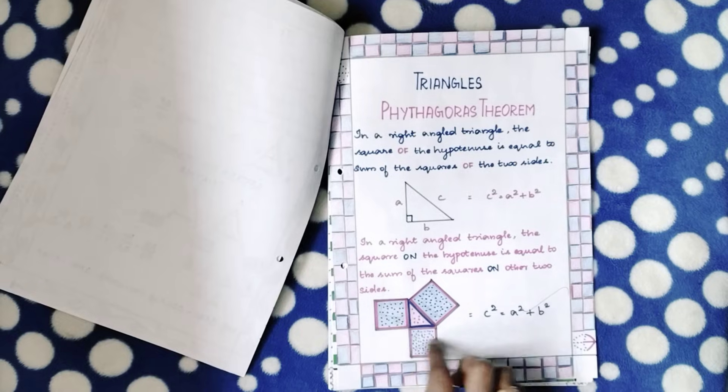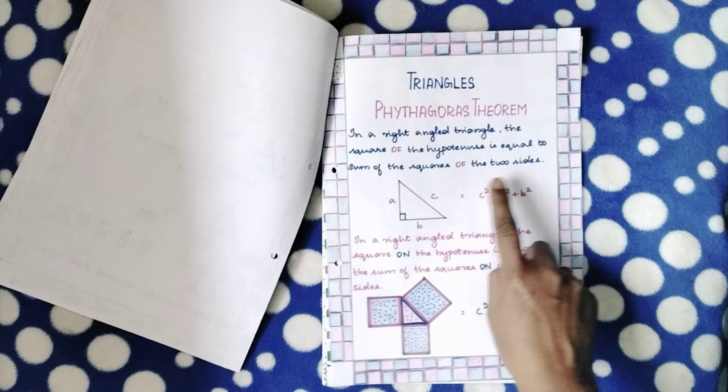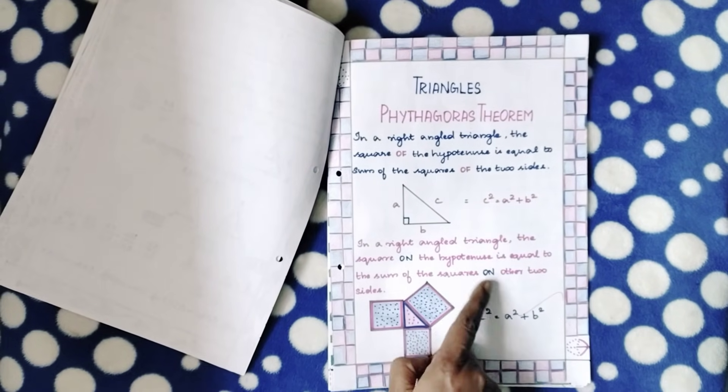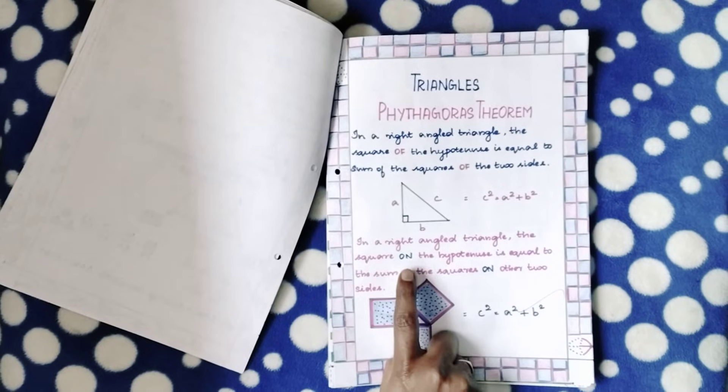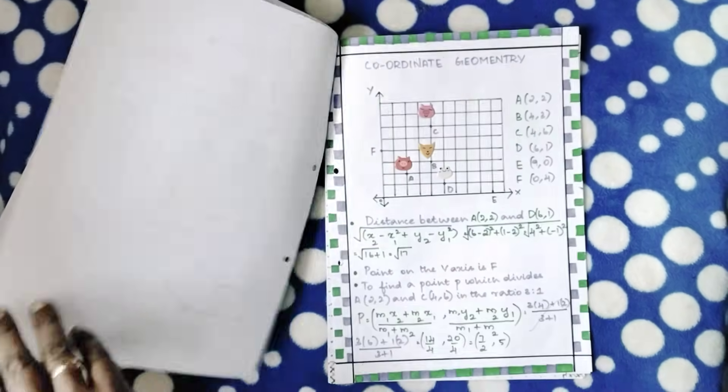She's proved with a simple diagram that the square of the hypotenuse is equal to the sum of the square of the other two sides. The same thing she's replaced, the preposition with 'on', and she's proved the theorem.